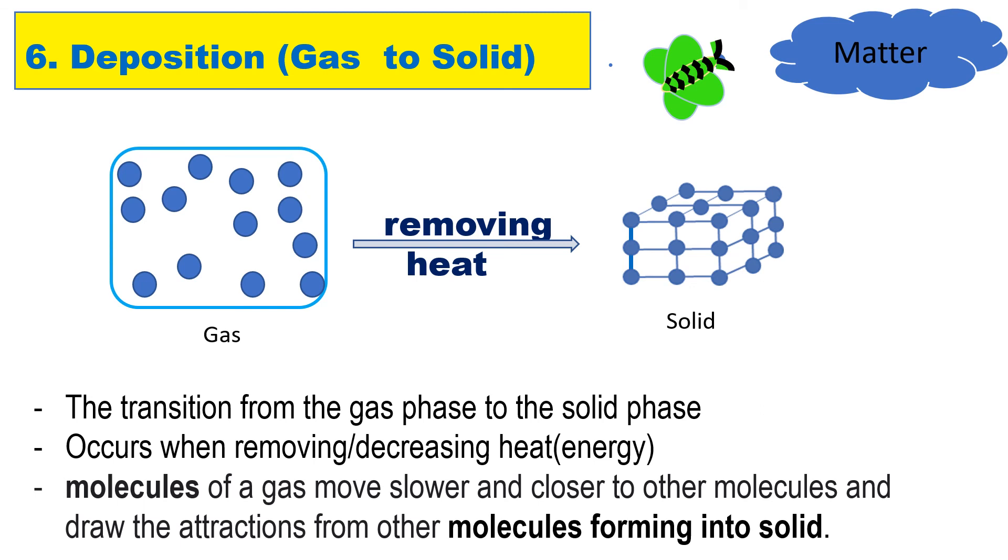An example of deposition is the process by which in sub-freezing air, water vapor changes directly to ice without first becoming a liquid. This is how frost forms on the ground and other surfaces. Another example is when frost forms on a leaf.